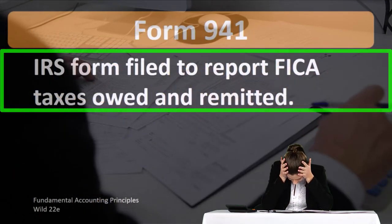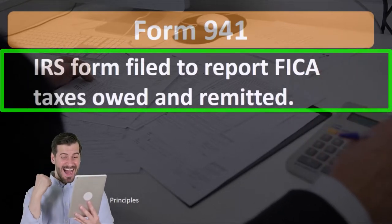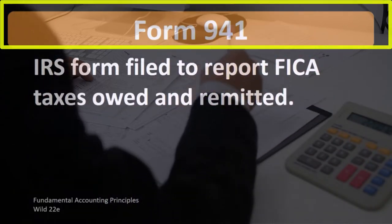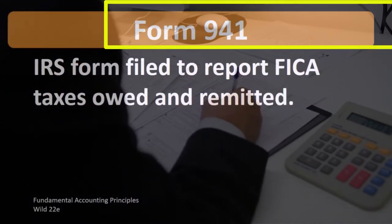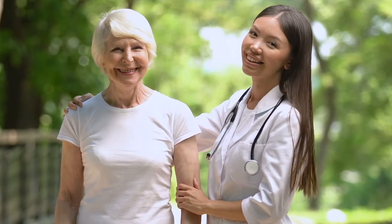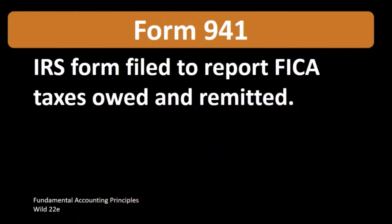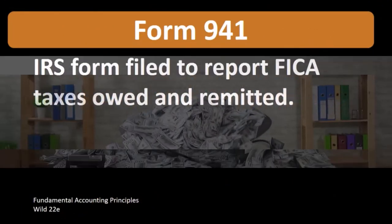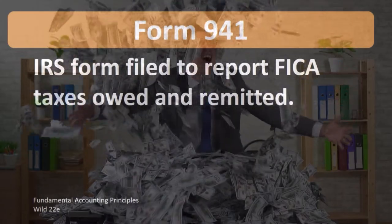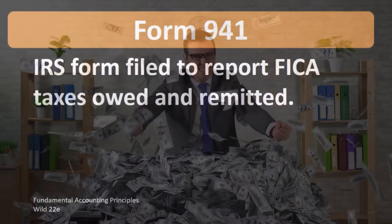FICA is the law that governs Social Security and Medicare. Form 941 is going to show what the liability is in relation to Social Security, Medicare, as well as the federal income tax that has been withheld — not for the corporation on corporate wages or corporate net income, but for the withholdings from employees for their federal income tax withholding.